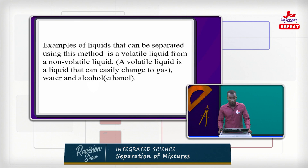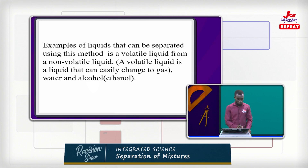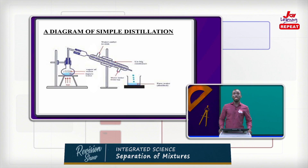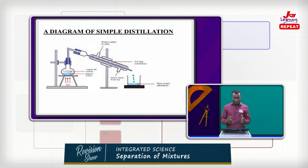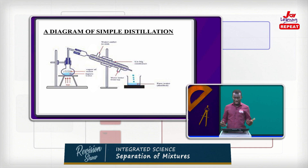An example of liquids that can be separated using this method is a volatile liquid from a non-volatile liquid. A volatile liquid is a liquid that can easily change to gas. A clear example is separating alcohol or ethanol from water. This is a very clear diagram for simple distillation — here we see a Bunsen burner, a round-bottom flask, a condenser, a water outlet, water inlet, and a beaker at the bottom.